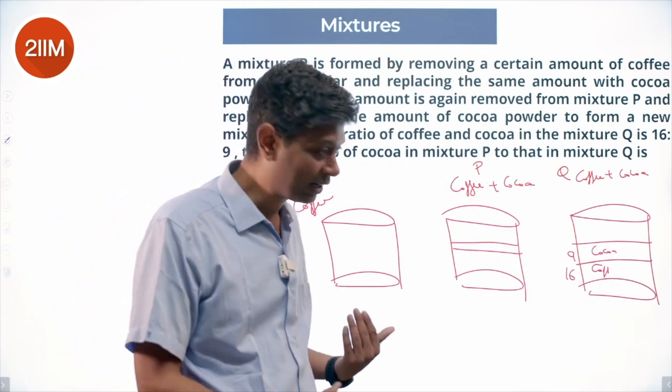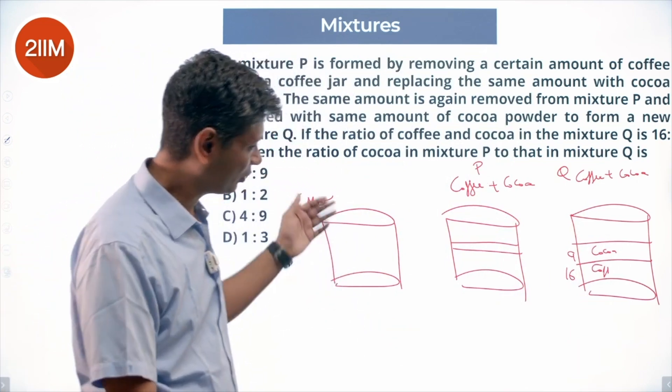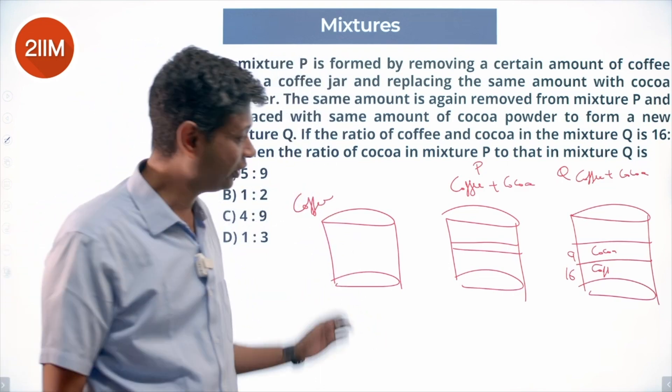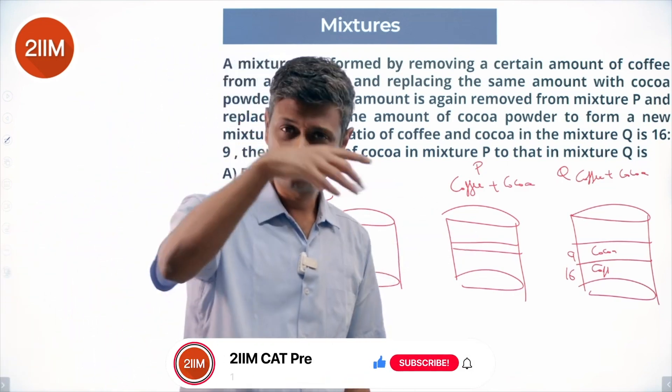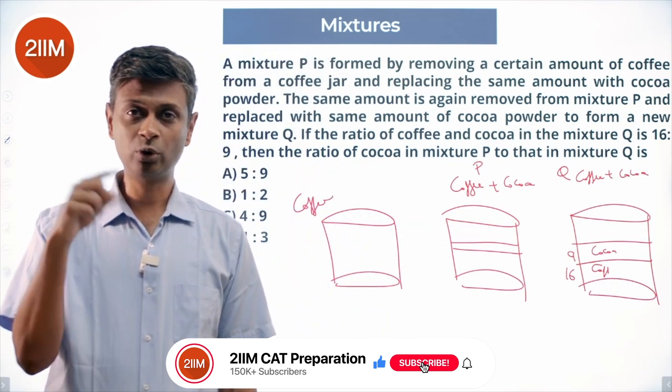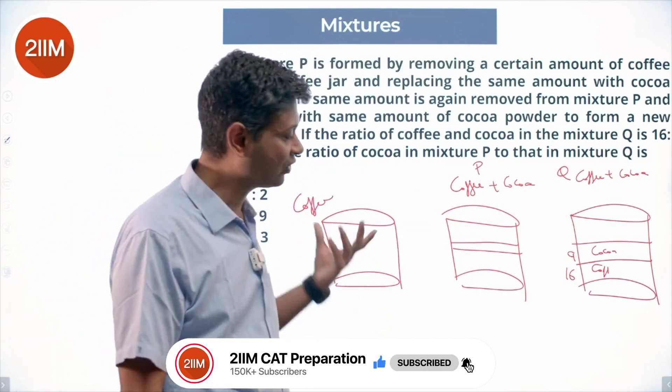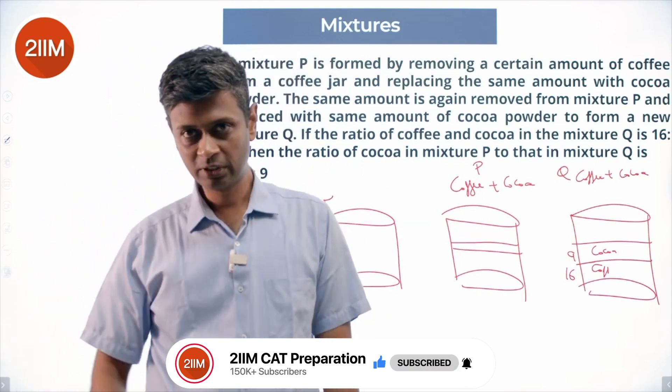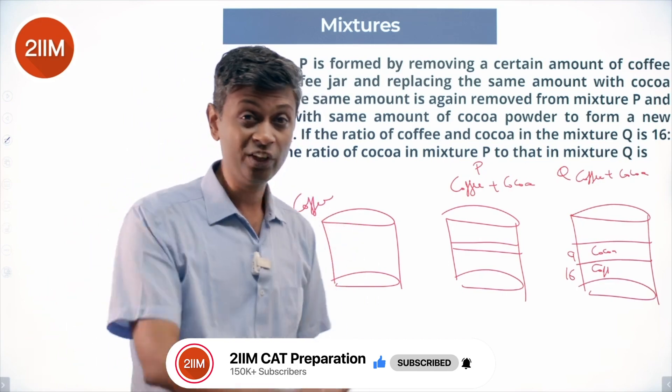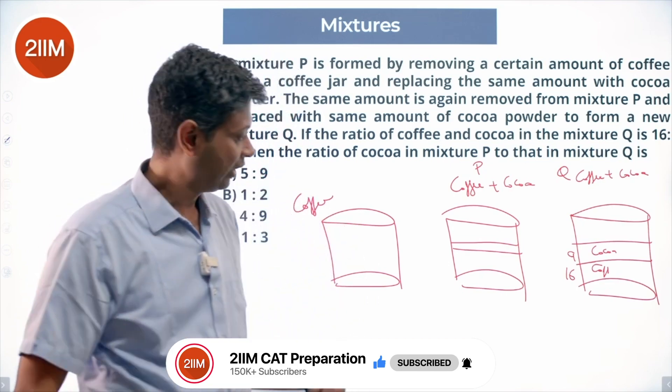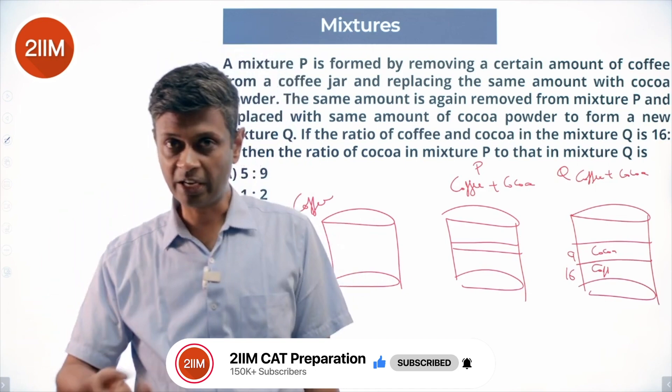Because in this question we forget cocoa - we start with coffee, the share of coffee reduces. We're taking coffee out, replacing with cocoa. So if I am removing half the coffee, half the coffee will remain. If I am removing 1/7th of coffee, 6/7 will remain. If I am removing 1/8th of coffee, 7/8 will remain.